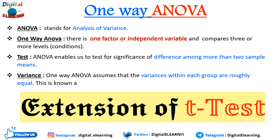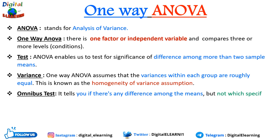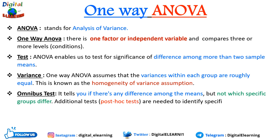For variance, one-way ANOVA assumes that the variance within each group are roughly equal — this is also known as the homogeneity of variance assumption. For the omnibus test, it tells you if there is any difference among the means, but not which specific groups are different from each other. For that we have additional tests like post hoc tests, which are needed to identify the specific differences between those groups.